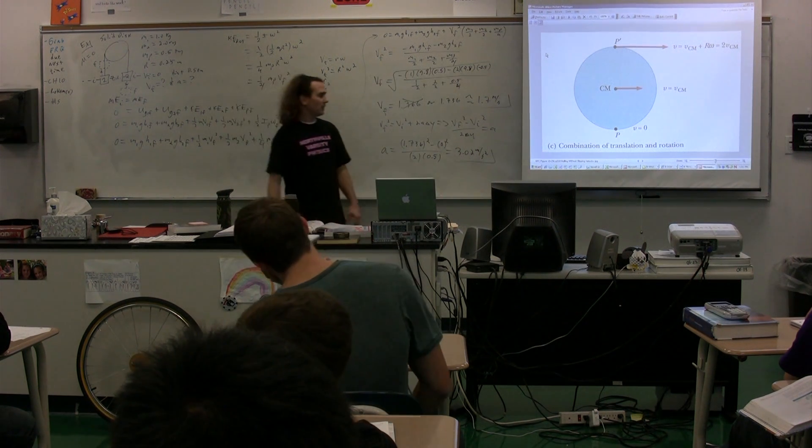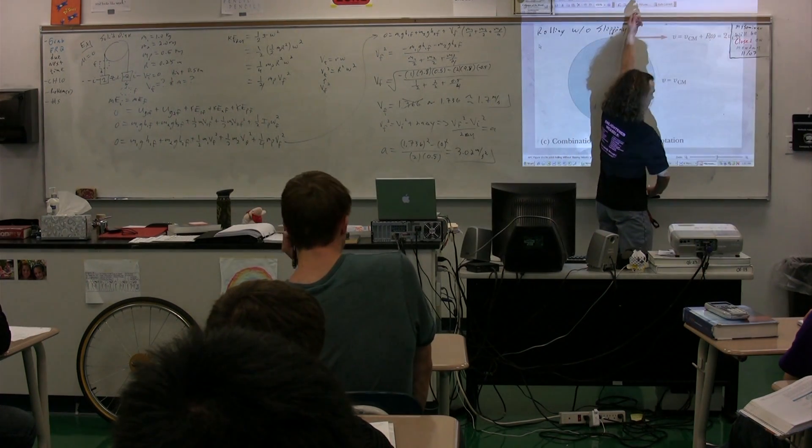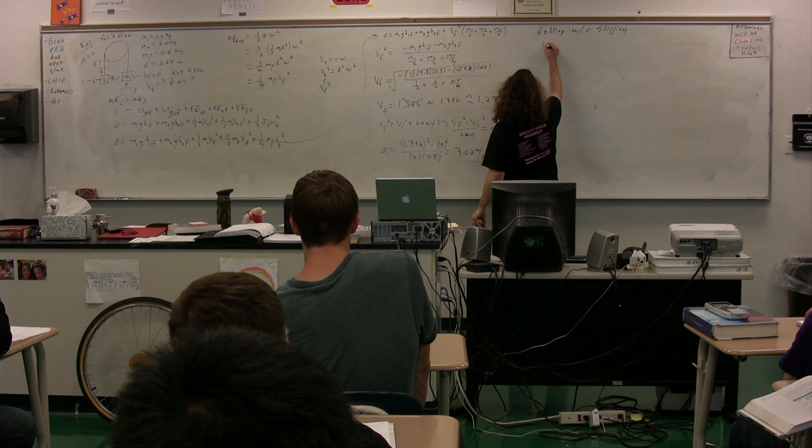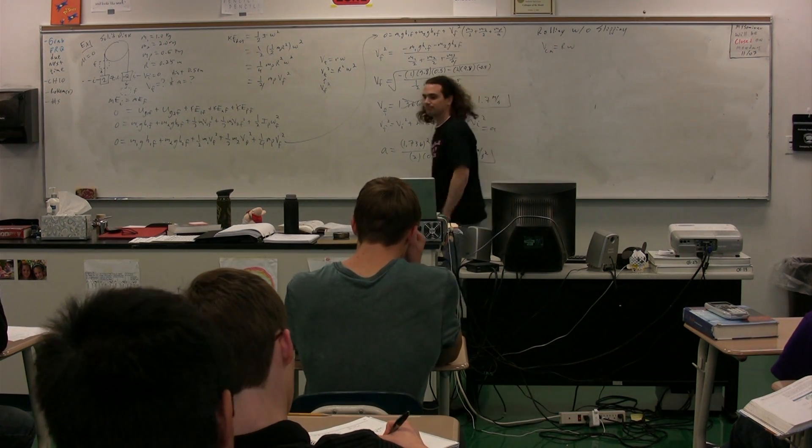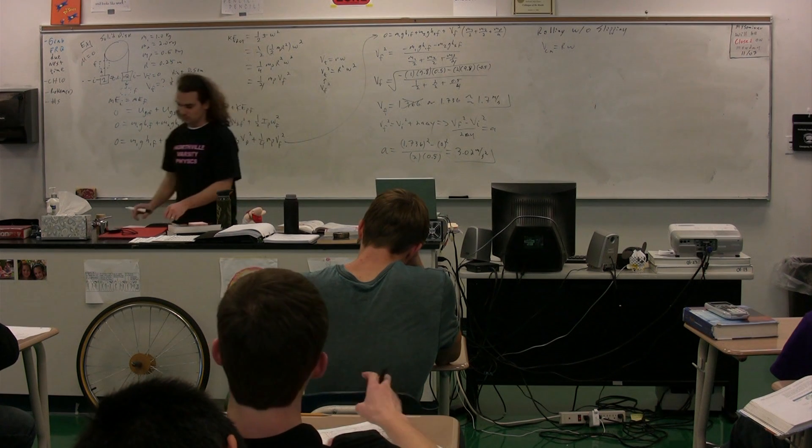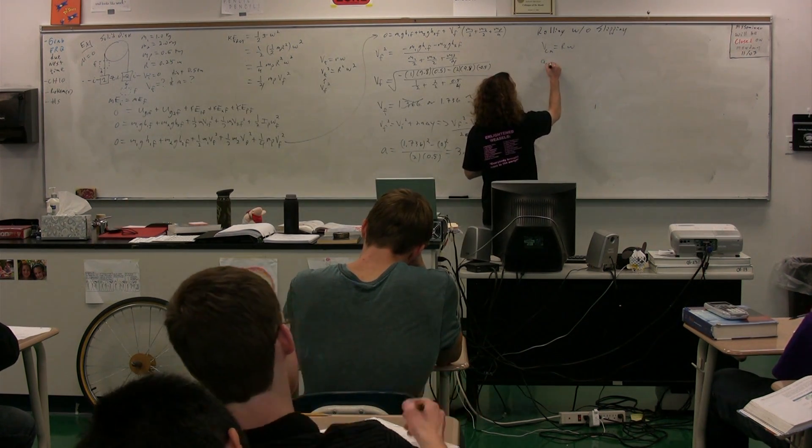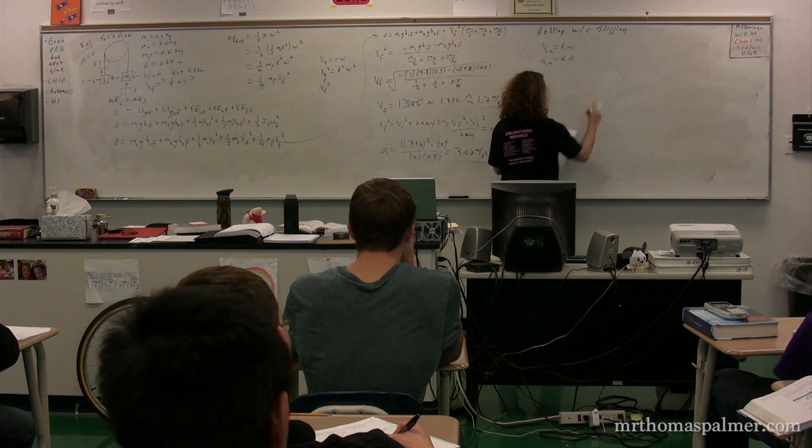And that, hopefully, will be useful later. The velocity of the center of mass is equal to r times omega. We can go through and you can actually figure out the acceleration of the center of mass is also equal to r times alpha.